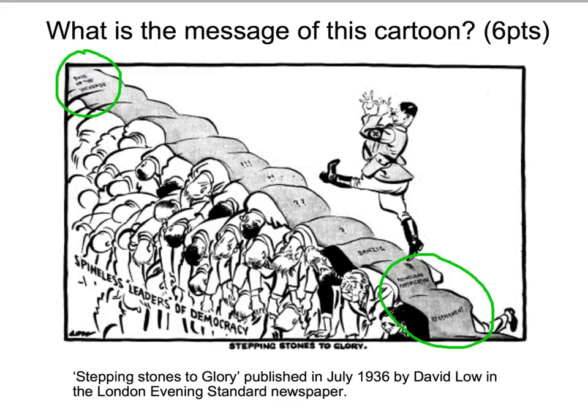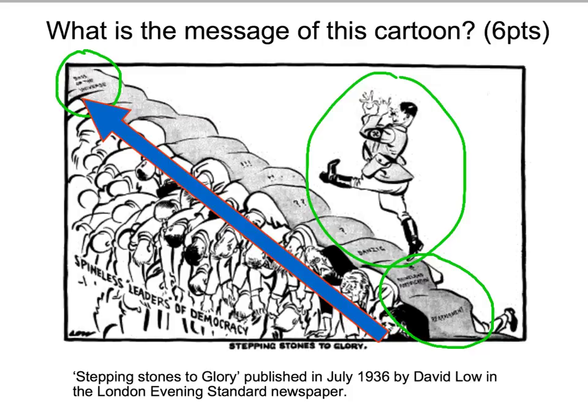The overall message, I think, is that Lowe is showing Hitler as an aggressive figure, wanting to become something the Treaty of Versailles should have prevented. Hitler is on a path starting small but increasing his power to take over something much larger. The message is also a clear criticism of the 'Spineless Leaders of Democracy' — Britain and France — shown as Hitler simply makes fun of them because they aren't doing anything to stop him.